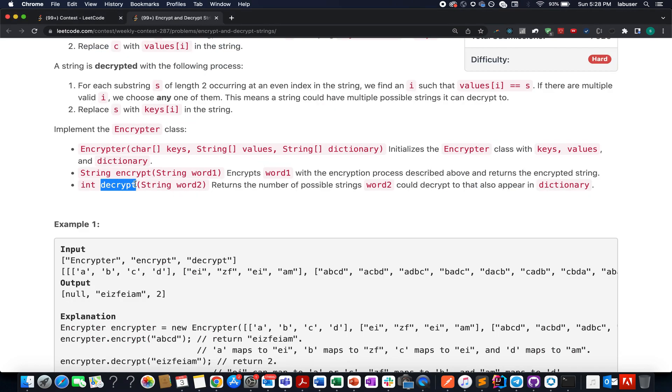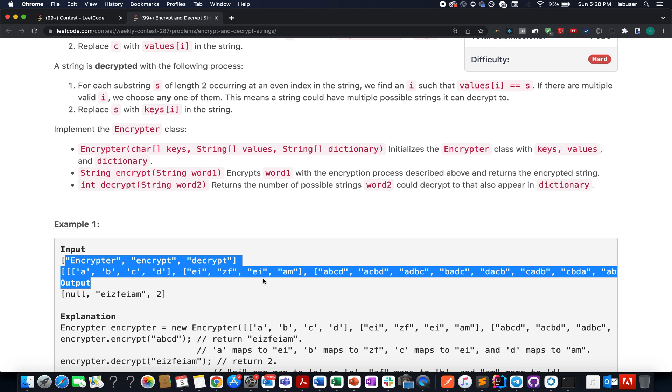The last one we need to define is decrypt. Here we are given an encrypted string, we need to decrypt this string into possible values and then check out of those possible values how many exist in my dictionary, so I need to return that count. Without further ado, this is the example they have provided, I'll be walking you through this example as well as the algorithm.